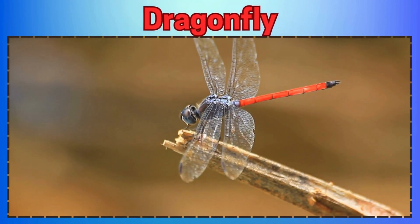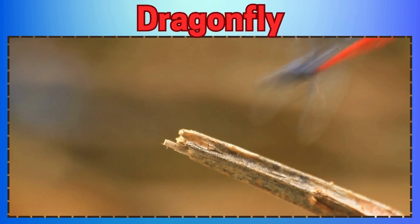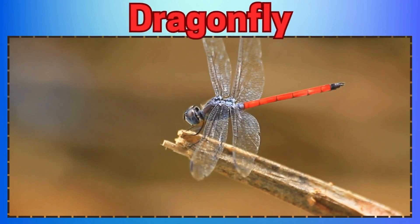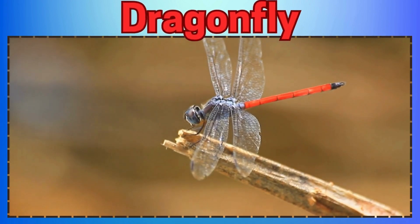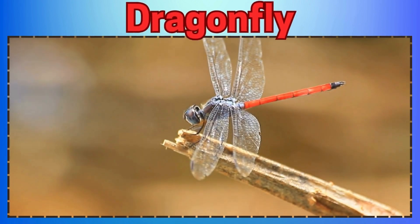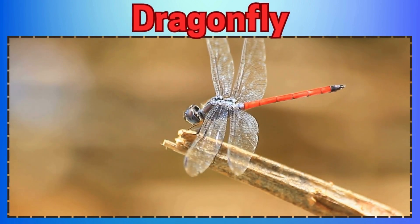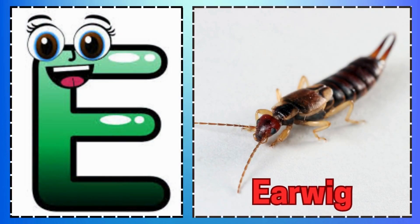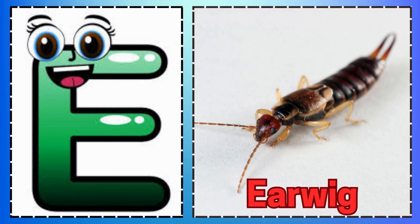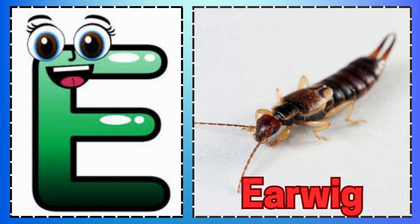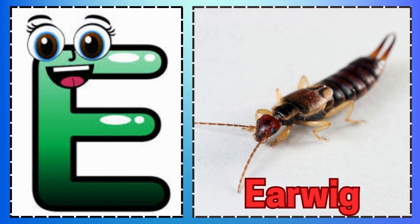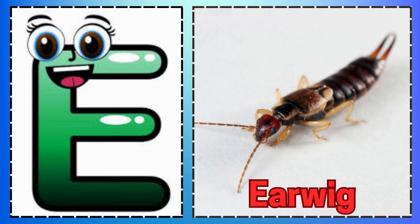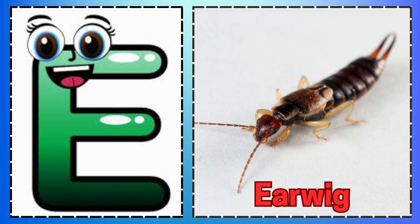U is for Underwing Moth Hiding in Trees. V is for Velvet Ant Crawling with Ease. E is for Earwig.